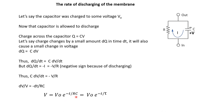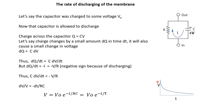Since R and C are both constants, we can replace their product with a single constant tau (τ). So finally we have V = V0 · e^(−t/τ) — it's an exponential decay. At t = 0, this term becomes 1, so V = V0. As t becomes larger, this fraction becomes smaller than 1, so V will reduce. And at t = infinity, V will become 0. So we have an exponential decay, and this is how the voltage across the capacitor changes over time.